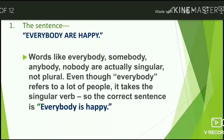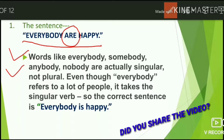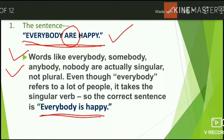The first error: 'Everybody are happy.' The mistake here is using 'are' — everybody is singular, so we must use 'is' with it. Everybody, somebody, anybody, and nobody are all singular, not plural. Even though 'everybody' refers to a lot of people, it takes the singular verb form. The correct sentence is: 'Everybody is happy.'